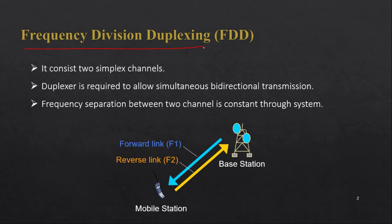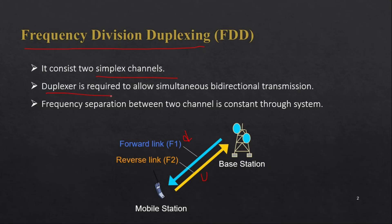Let us start with frequency division duplexing, FDD. It consists of two simplex channels — one for the forward link and another for the reverse link. The forward link is the signal from base station to mobile station, also called downlink. The reverse link is from mobile station to base station, also called uplink. Both uplink and downlink use separate frequencies, and a duplexer is required to allow simultaneous bidirectional transmission. The frequency separation between the two channels is constant throughout the system.